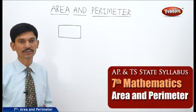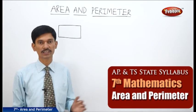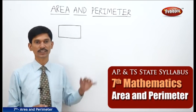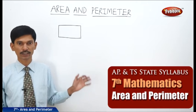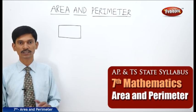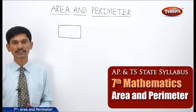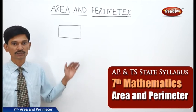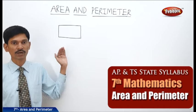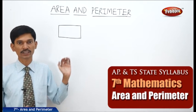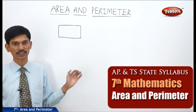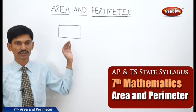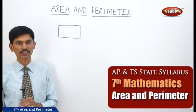You are already familiar with the area and perimeter of rectangle and the square in your earlier classes. Now let us recall the formulas to find the area and perimeter of the rectangle and the square once again.